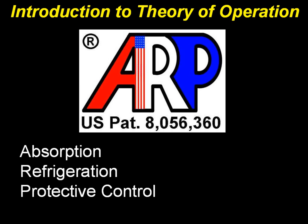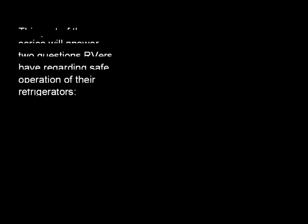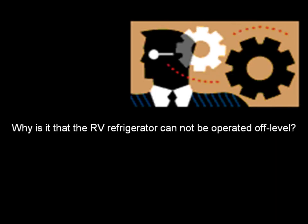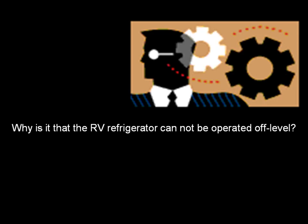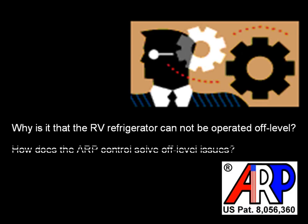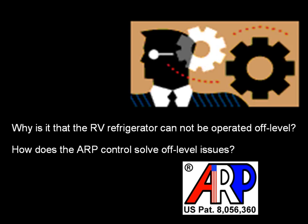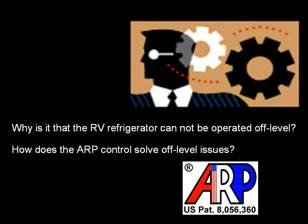This is the second video in the series. This is the introduction to the theory of operation of the absorption refrigeration protective control. This part of the series will answer two questions RVers have regarding safe operation of their refrigerators: why is it that the RV refrigerator cannot be operated off-level, and how does the ARP control solve off-level issues?